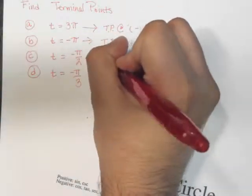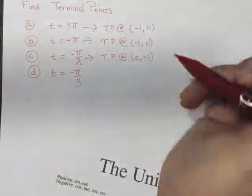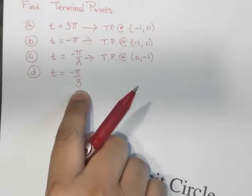Okay, so let's jot that down. Terminal point at 0, negative 1. Now let's take a look at another one, negative π over 3.